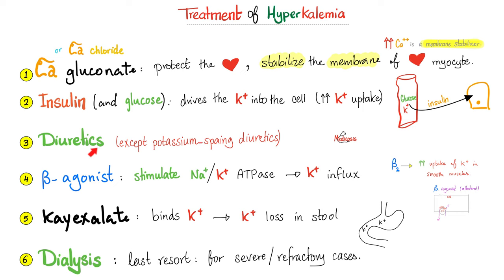Can I give a medication that stimulates the sodium-potassium ATPase to push more potassium inside the cell, leaving less potassium outside? Absolutely — beta agonists serve this purpose.